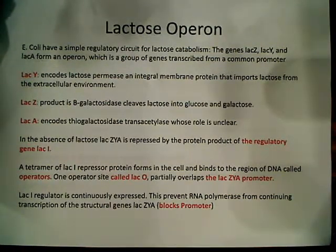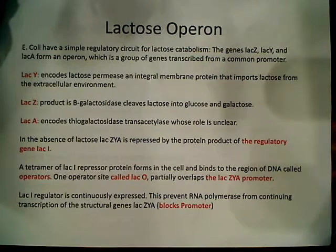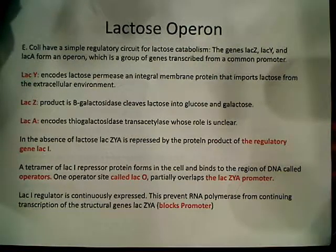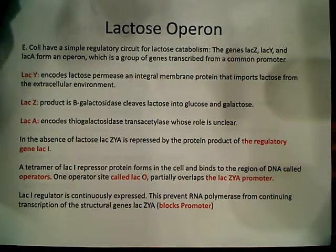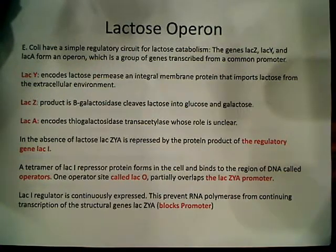LacA encodes for thiogalactosidase transacetylase. However, we really don't know what the role of lacA is in this whole process, so I'm not going to talk too much about it. Now that we've defined what the structural genes are and what products they produce, and what an operon is, we can talk about the process — just how this gene regulation occurs.